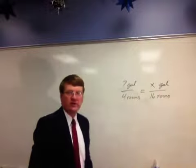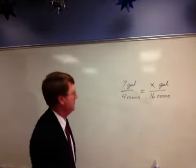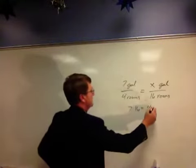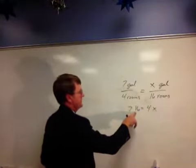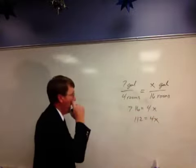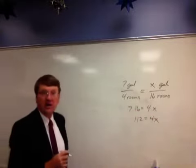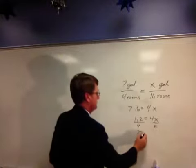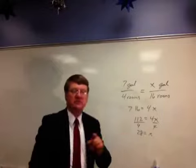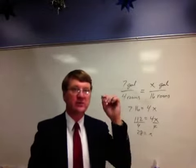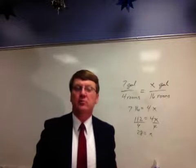Call it X, call it Y, call it Q, call it Bob. I don't care. 16 times 7 is 4 times X. 7 times 16, 42, 112. Divide 112 by 4, 28. If seven gallons does four rooms, then to get 16, that's four times as big. It'd have to be in the same ratio, the same proportion.